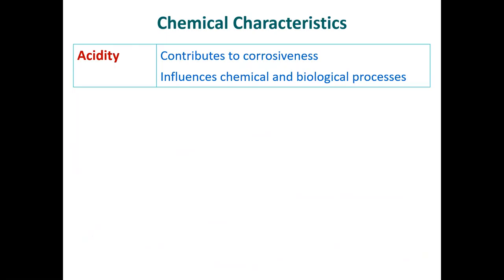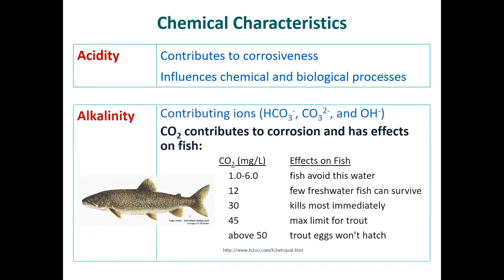Acidity makes water more reactive and can corrode pipes. Alkalinity is very similar in terms of reactivity, and we're usually talking about carbonate and bicarbonate. This can also have an effect on fish — lake trout will avoid affected water. It's correlating this to carbon dioxide because CO₂ makes carbonic acid, which contributes to carbonate and bicarbonate. Many species can't spawn or hatch their eggs at higher concentrations.